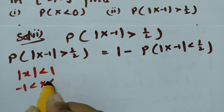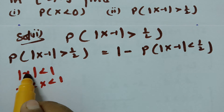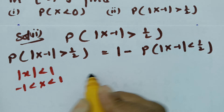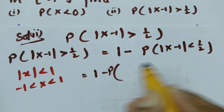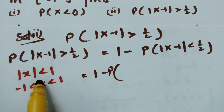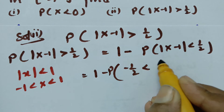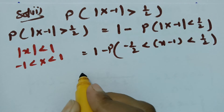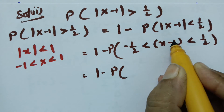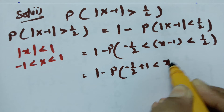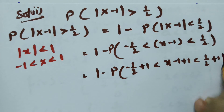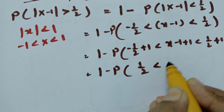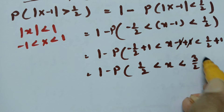When modulus of x is less than 1, we can write this as minus 1 less than x less than plus 1. So in this case, modulus of x minus 1 less than half can be written as minus half less than x minus 1 less than plus half. Adding 1 throughout: half less than x less than 3 by 2. So this is 1 minus probability of half less than x less than 3 by 2.